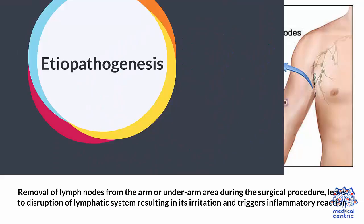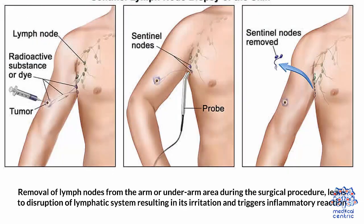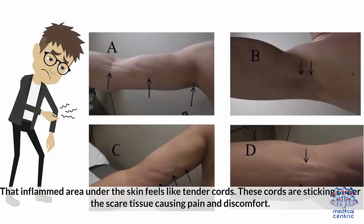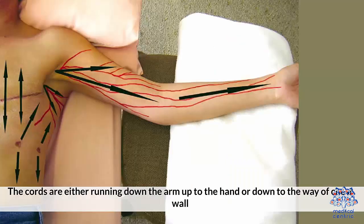Removal of lymph nodes from the arm or underarm area during the surgical procedure leads to disruption of the lymphatic system, resulting in its irritation and triggering an inflammatory reaction. That inflamed area under the skin feels like tender cords. These cords are sticking under the scar tissue, causing pain and discomfort. The cords are either running down the arm or down toward the chest wall.